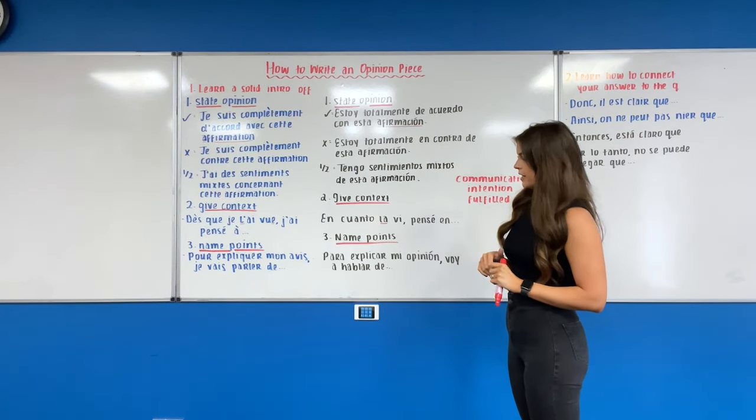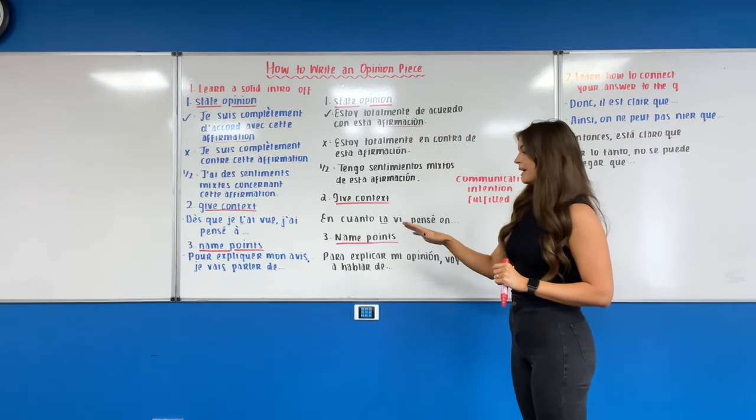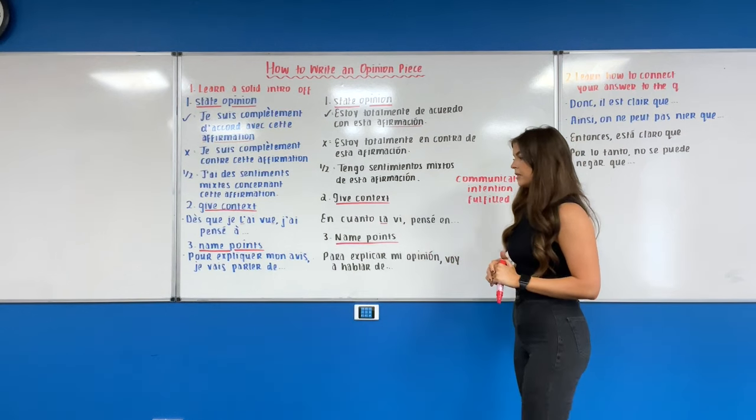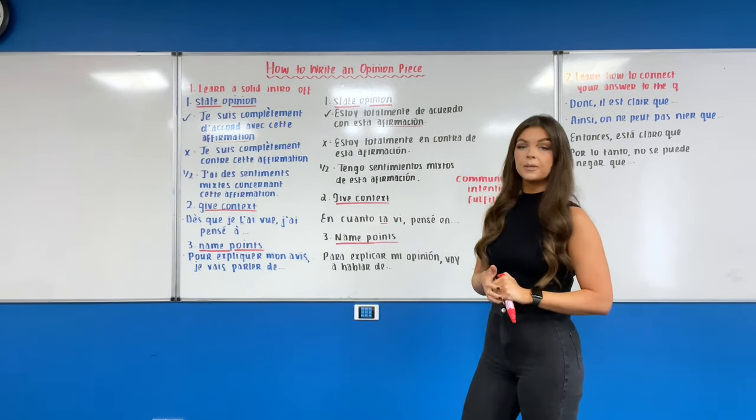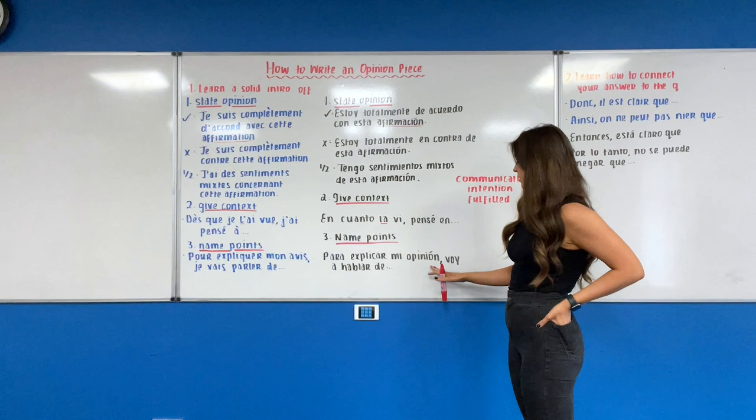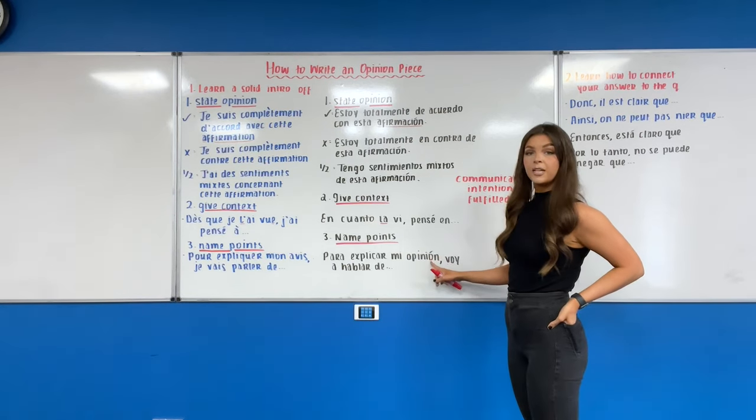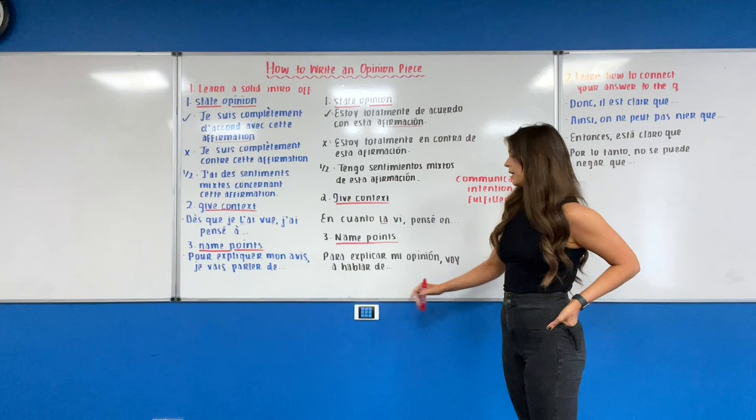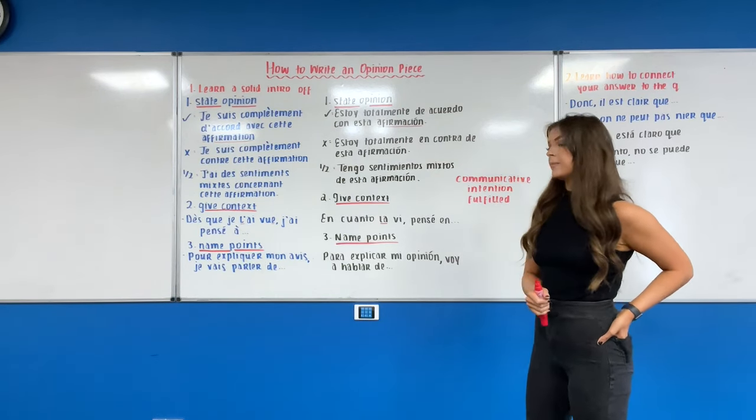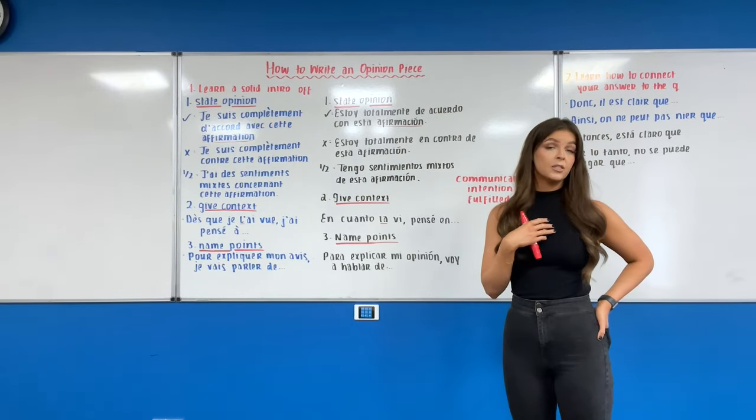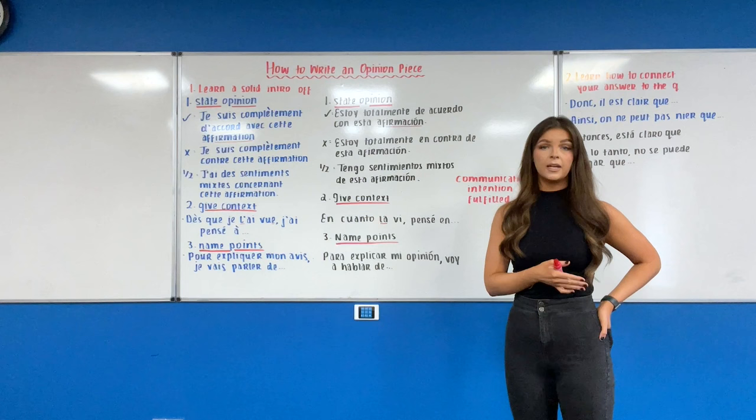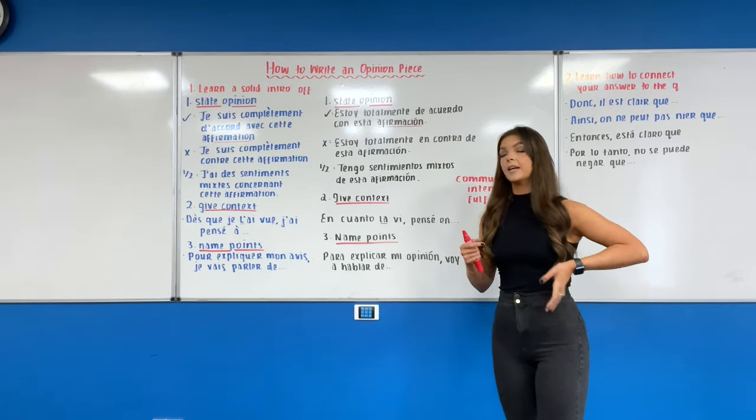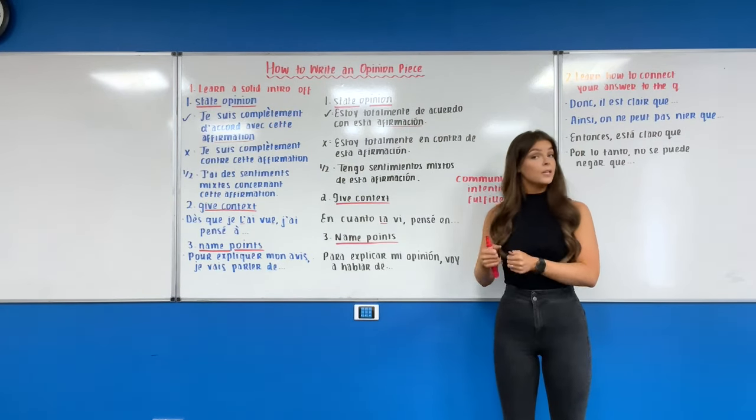Then we're going to go into step number three which is naming our points. So 'in order to explain my opinion I'm going to speak about.' Same thing in Spanish: para explicar mi opinión. Just be cautious in Spanish, the accent is always on the o in those words that end in -ión. Voy a hablar de. So 'in order to explain my opinion I am going to speak about.'